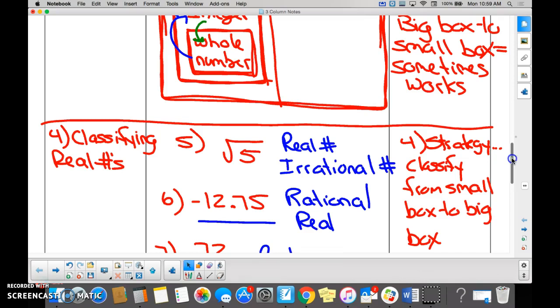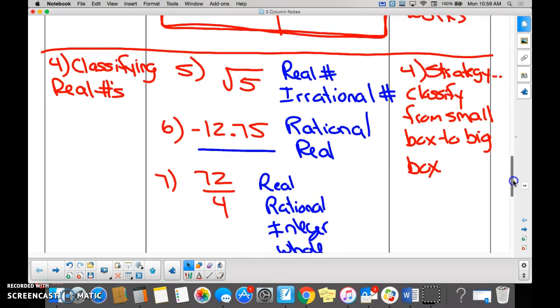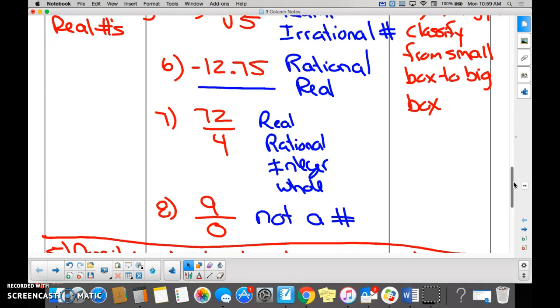On number seven, there are some calculations again. 72 over four. Do you have to calculate what 72 over four is? Yeah, 72 over four is 18 and 72 over four and 18 are whole numbers. Yes or no? Yes. Because 72 divided by four equals 18.